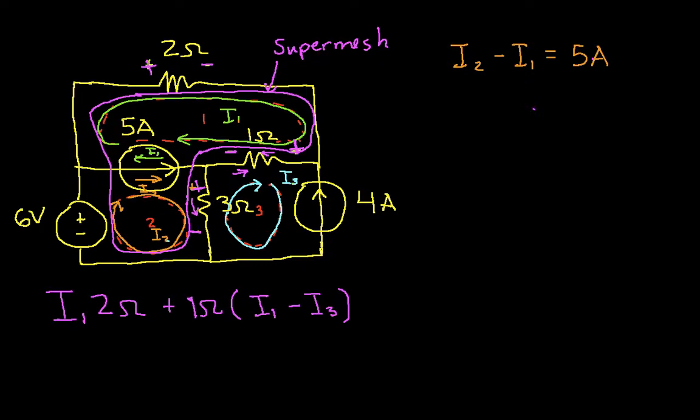And going down through the 3 ohm resistor, I have I2. So I have plus 2 ohms, I2. And going up through the 3 ohm resistor, I have I3. So again, I have minus I3. So I keep cruising around my super mesh, I get to the 6 volt voltage source. And so the next thing I need to do then, I'm going from negative to positive, so this will be minus 6 volts. And then I keep cruising around my super mesh, and I'm back where I started. So this is all equal to 0.